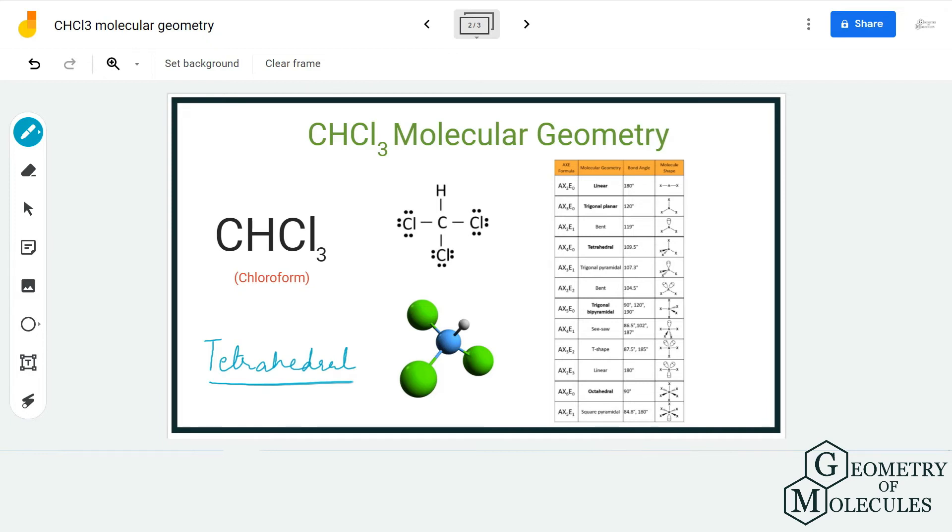...we are going to use the AXN notation. So the AXN notation for CHCl3 will be AX4, because there are four atoms forming bonds with the central atom. As there are no lone pairs, we have AX4E0, which corresponds to tetrahedral.